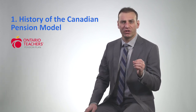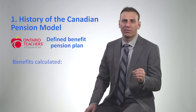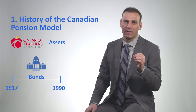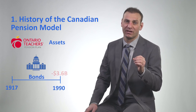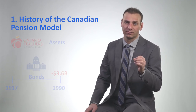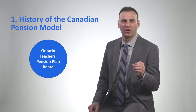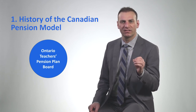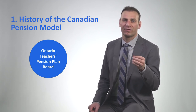The Ontario Teachers' Pension Plan is a defined benefit pension plan, which means when teachers retire, they receive benefits that are calculated based on characteristics such as years of service and salaries. In 1990, after investing in government bonds for over 73 years, the pension plan had a deficit of $3.6 billion. So in 1990, the government of Ontario, combining with the Ontario Teachers' Federation, formed the Ontario Teachers' Pension Plan Board — a privatized entity with independent governance — with the intention of increasing returns on pension assets so that Ontario teachers would receive their benefits when they retire.